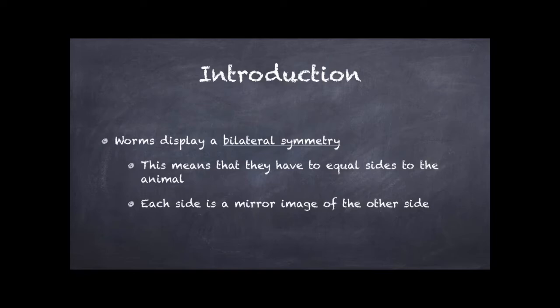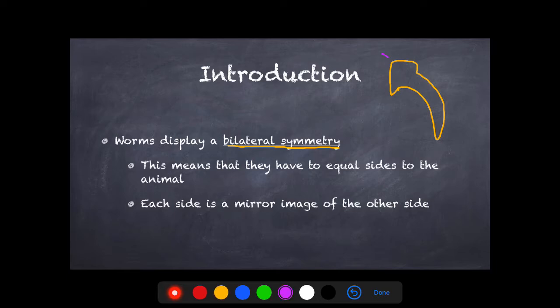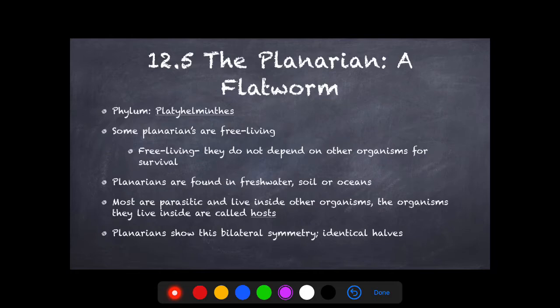One important thing about these flatworms and roundworms is that they show bilateral symmetry. This is an important term for you to know. What this means is that they have equal sides to the animal, so if you cut them right in half they're going to have mirror images of both of their sides — they're going to look like a reflection. That's what bilateral symmetry means.